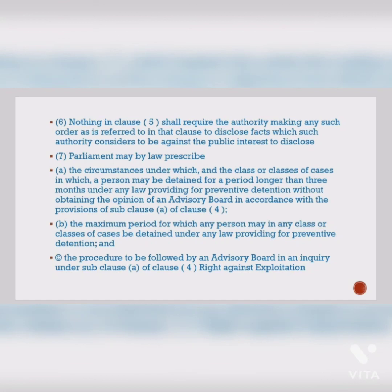Preventive detention laws do not apply to enemy aliens. An enemy alien refers to any native or citizen who is in conflict with the domestic government — they are liable to be apprehended, restrained, secured, and removed. So preventive detention laws do not apply to enemy aliens.